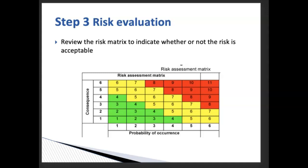The third step is risk evaluation. After identifying and analyzing risks, we put them into a priority table. Risks that have severe outcomes and happen frequently we deal with first. Risks that have only a slightly negative impact and happen rarely we deal with last. We classify them based on severity and frequency, dealing with the most severe and frequent risks first and the less important ones later.